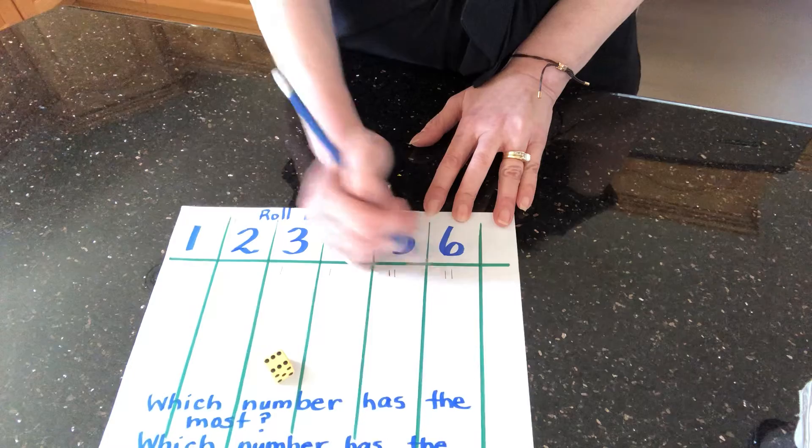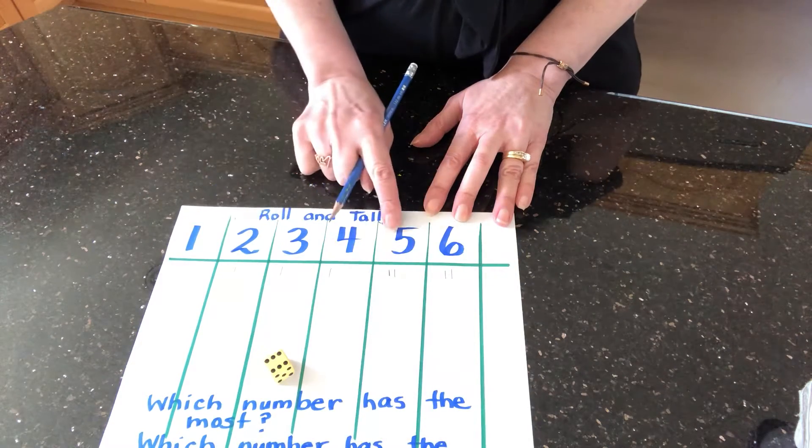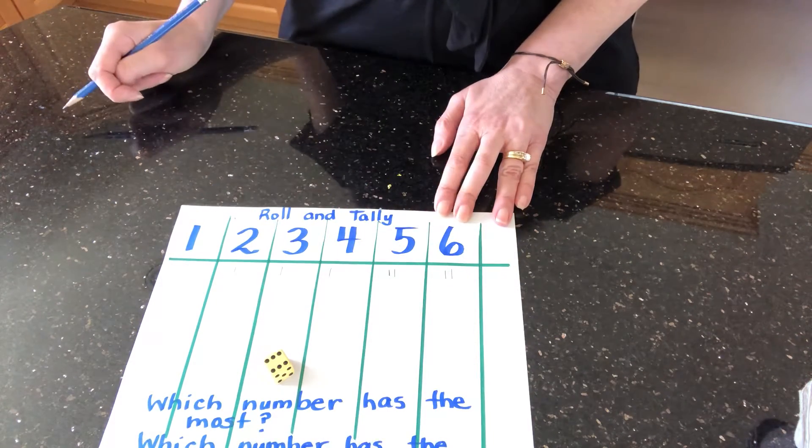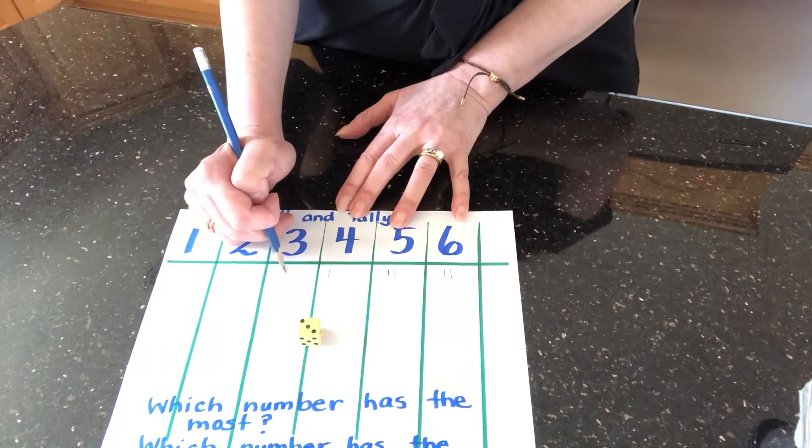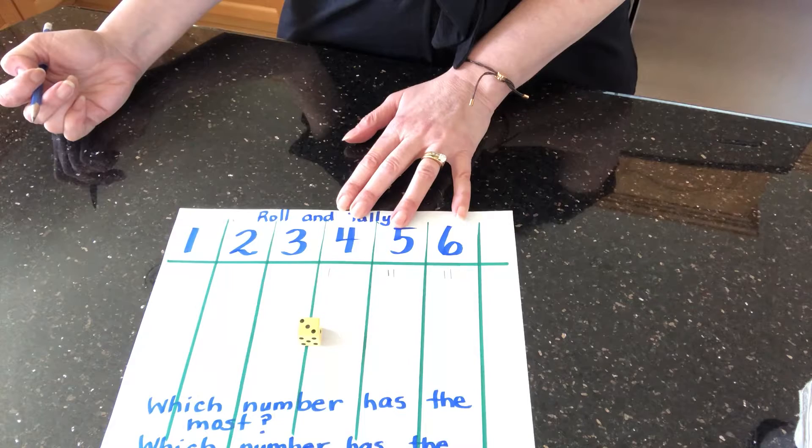Six! Six! Now two and five and six are tied with two each. Three! Hmm, I wonder which one's going to win.